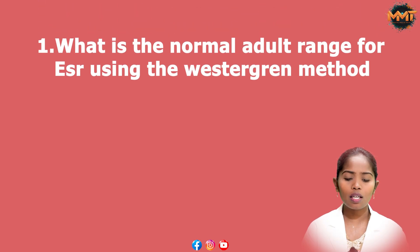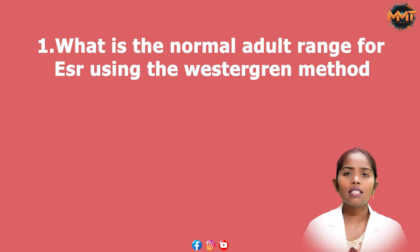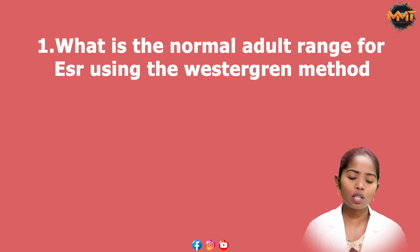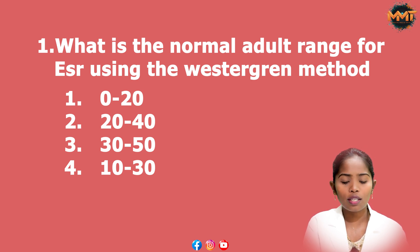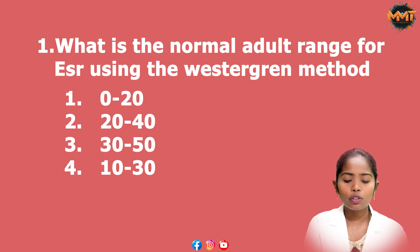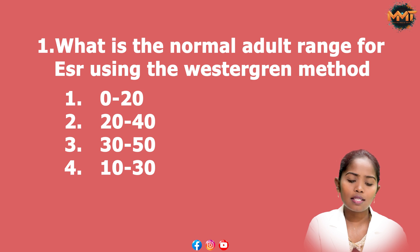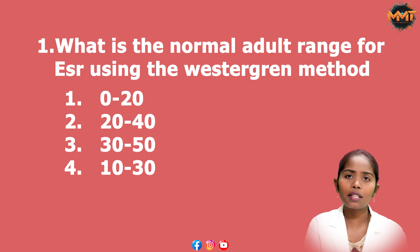Question 1: What is the normal adult range of ESR using the Westergren method? Option 1: 0 to 20 mm per hour. Option 2: 20 mm to 40 mm. Option 3: 30 mm to 50 mm. Option 4: 10 mm to 30 mm. The correct answer is Option 1: 0 to 20 mm per hour, which is the correct ESR range for adults.